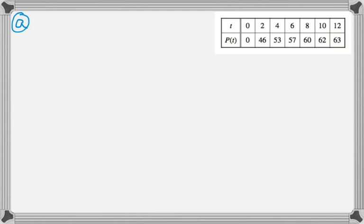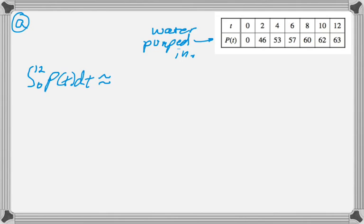So the first thing, we are given this chart here, P of T, which is in cubic feet per hour. It's the rate at which water is pumped into the pool. So you might want to make a note on your paper that this is a rate or derivative, and it's water being pumped into the pool. And we are asked to approximate the total amount that goes into the pool using a midpoint Riemann sum.